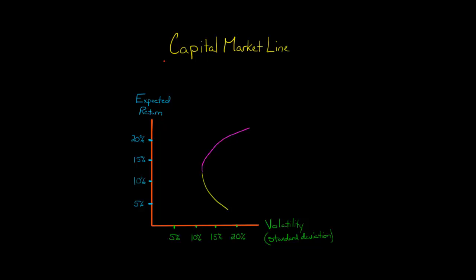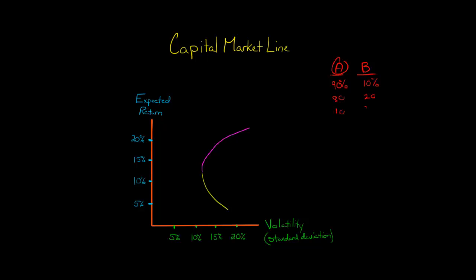In this video, I want to show you the capital market line. Let's say we have an investor who's going to invest in a portfolio that includes two stocks — stock A and stock B. This investor can invest in any different number of combinations. They could put 90% of the portfolio in stock A and 10% in stock B, or they could do 80-20, 10-90, any number of combinations.